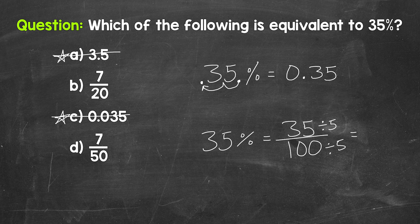35 divided by five gives us seven, and 100 divided by five gives us 20. The only common factor between seven and 20 is one, so we are in simplest form here: seven twentieths. That's 35 hundredths in simplest form.